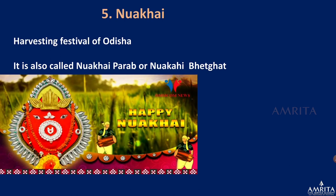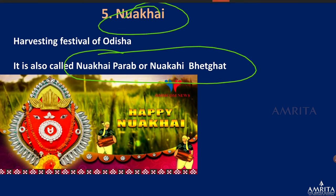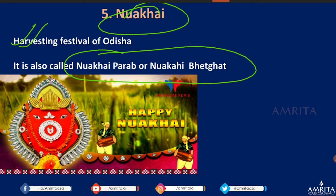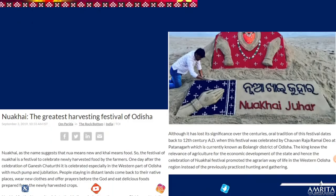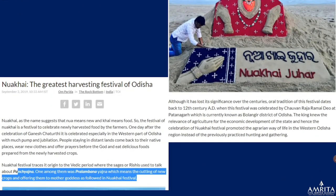Next is Nua Khai, the harvest festival of Odisha, also known as Nuakhai Juhar or Nua Khai Bhetghat. The name suggests: 'nua' means new and 'khai' means food, so it is a festival to celebrate the new harvest food by farmers. If a question comes on Nua Khai, remember it is a harvest festival of Odisha.